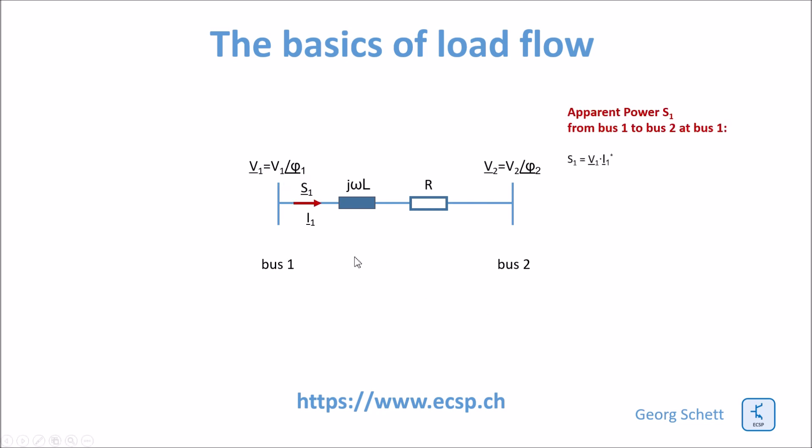The apparent power flowing from bus 1 to bus 2 is equal to the voltage times the current measured at bus 1. If you look very carefully you see a small but very important detail: this asterisk here. This stands for the current conjugate complex.